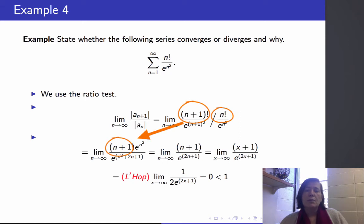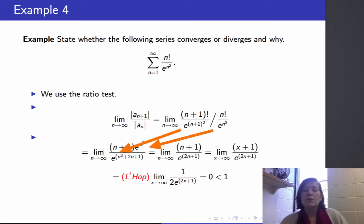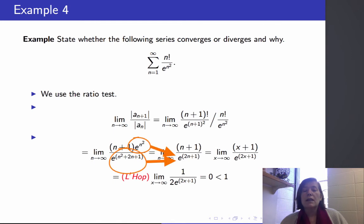Dividing (n+1)! by n! leaves us with (n+1), and we're looking at the limit as n goes to infinity of (n+1) times e^{n²} over e^{(n+1)²}, which equals e^{n² + 2n + 1}. We can break up e^{n² + 2n + 1} into e^{n²} times e^{2n+1} and cancel the e^{n²} terms. So we're left with the limit as n goes to infinity of (n+1) / e^{2n+1}.